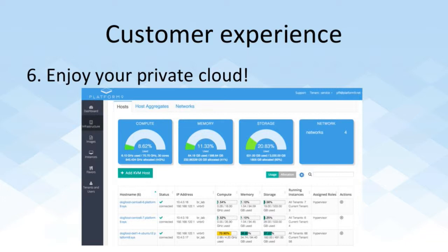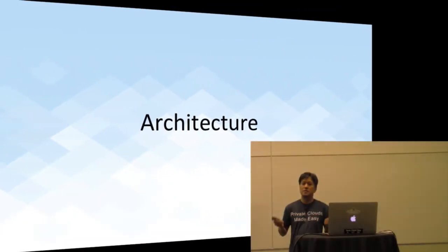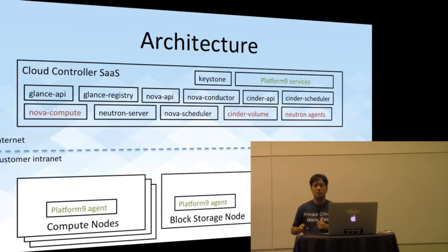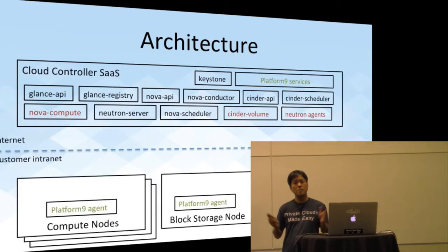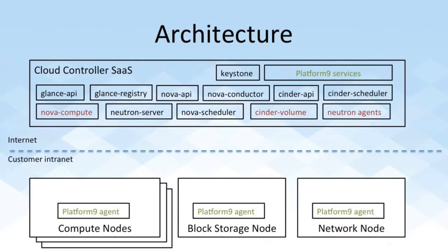This is the great customer experience that we want to provide. Now I want to deep dive into the technical aspect and discuss the architecture that enables us to provide this split model of deployment. Luckily, we take advantage of OpenStack because it's already designed with a decoupled distributed architecture. In this diagram, in the upper half, you'll see the cloud controller that we manage on behalf of the user, and on the bottom half are all the elements that run in the customer's data center behind the firewall. It is our goal to run as many of those OpenStack services as possible in the controller so that we can manage them for the user.